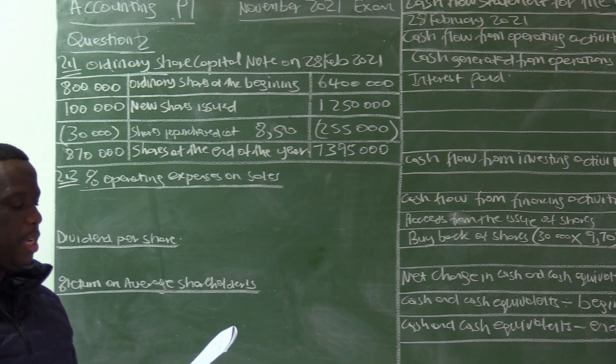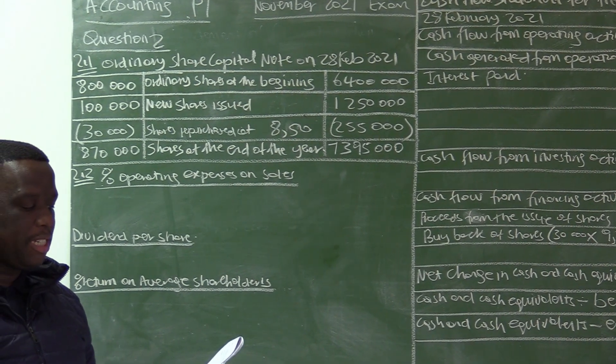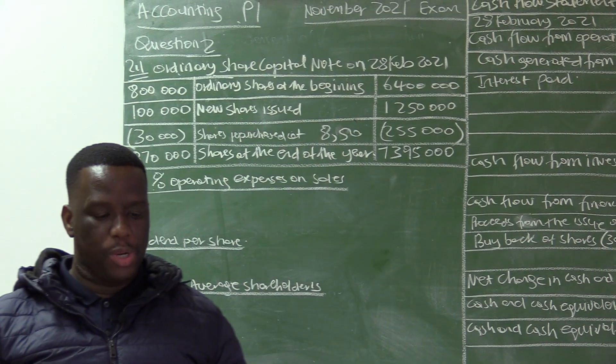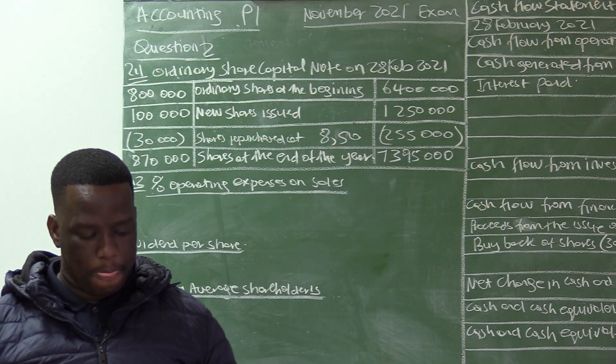We now want to continue to question 2.2, where we are required to calculate the following financial indicators on 28 February 2021.